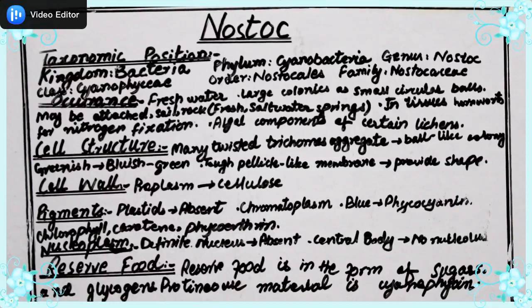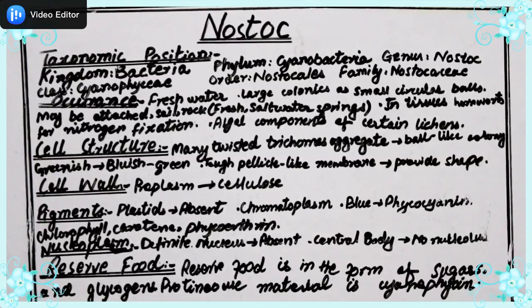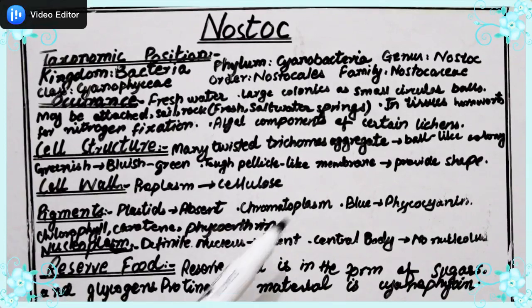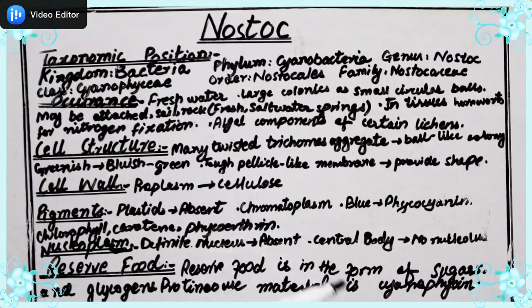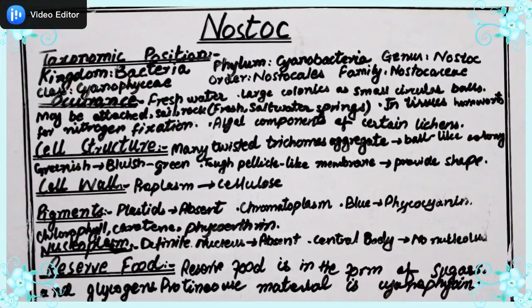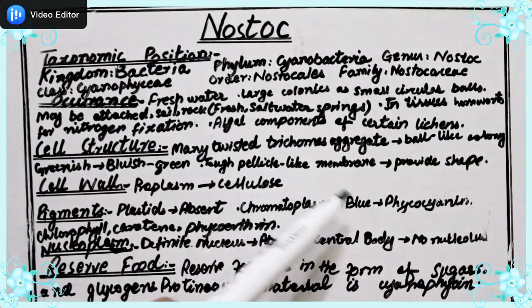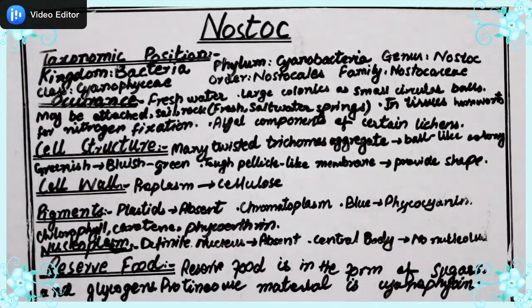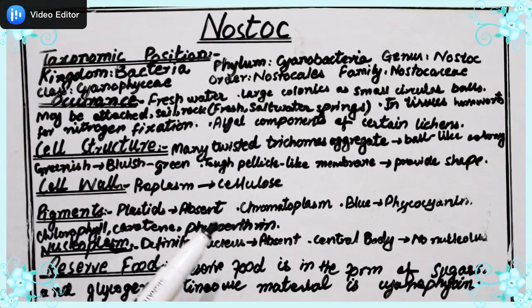Regarding pigments in cyanobacteria: plastids are not present — they do not have plastids or chloroplast-like structures for pigments. Instead, these pigments are present in the cytoplasm, which is known as chromatoplasm — because of the presence of color or pigment in the cytoplasm. The pigments include phycocyanin (blue), carotenoids, chlorophyll, and phycoerythrin.